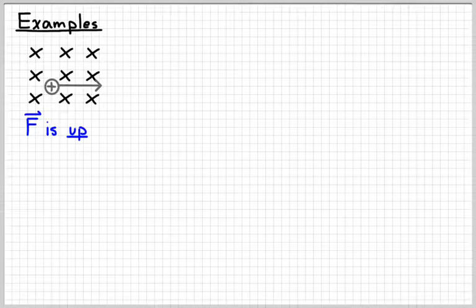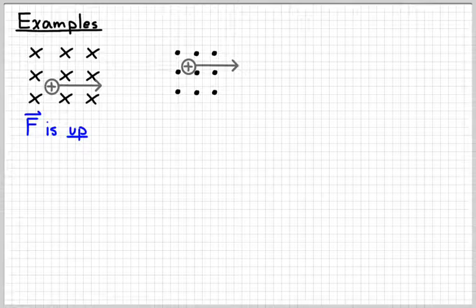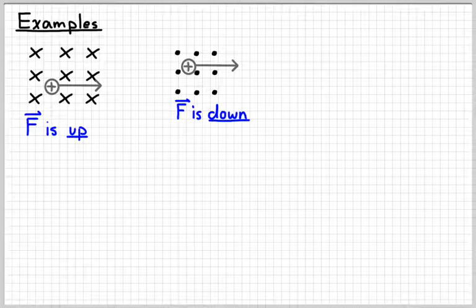Let's look at a few examples. That series of X's represents a magnetic field going into the page, and we've got a charge moving to the right. You would point your thumb to the right, then turn your hand so that your pointer finger is pointing into the screen. When you do that, your middle finger should be pointing upwards — so the magnetic force is upwards. In the next example, the dots represent a magnetic field coming out of the page and the charge is still moving to the right. Now orient your hand so that your pointer finger is pointing out of the screen — your middle finger should be pointing down, so the force is down.